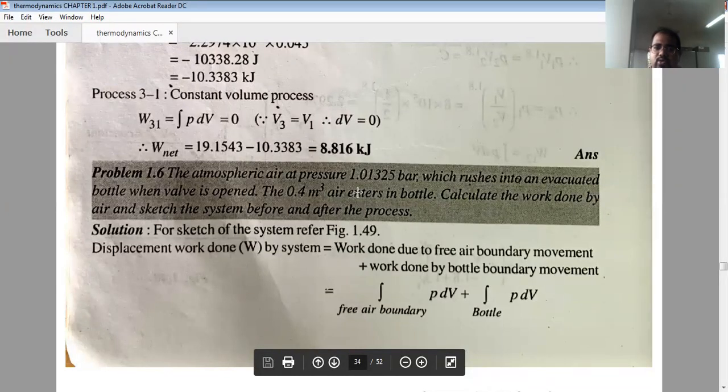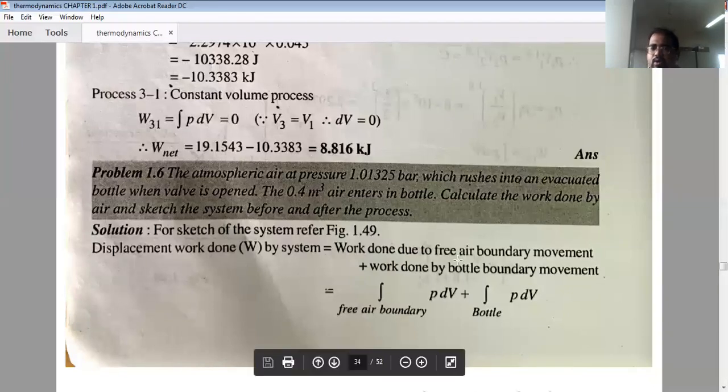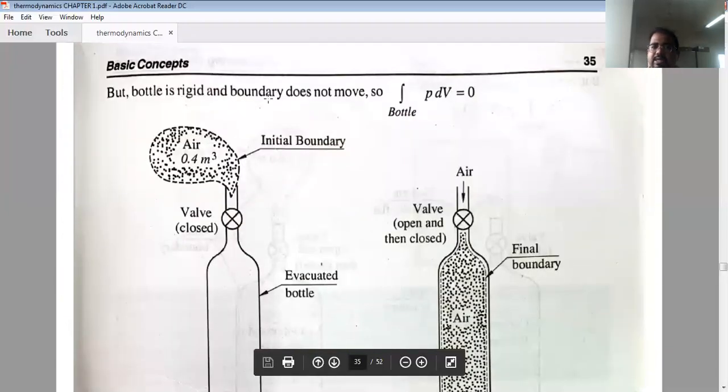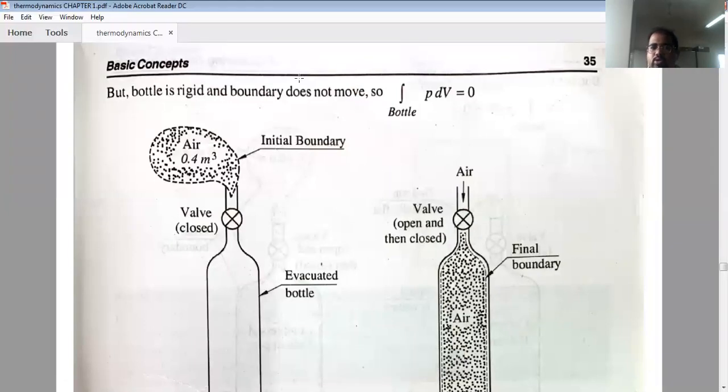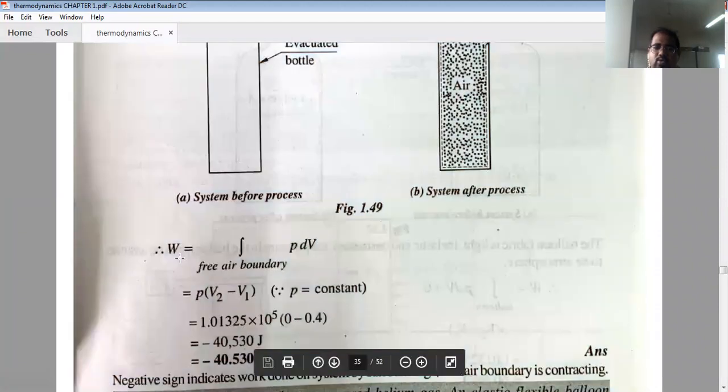If air enters into the bottle then we have P1 value is 1.01325 and V1 value is 0. Now what is the actual work done? The actual work done is displacement work done by system equals work done due to free air boundary movement plus work done by bottle boundary movement. After the statement was given that the bottle is rigid and boundary does not move. So the bottle is fixed and rigid, it means that it cannot change.